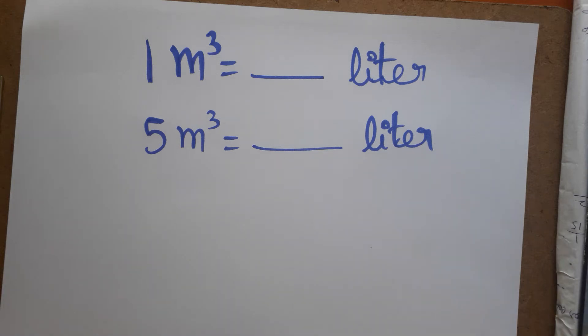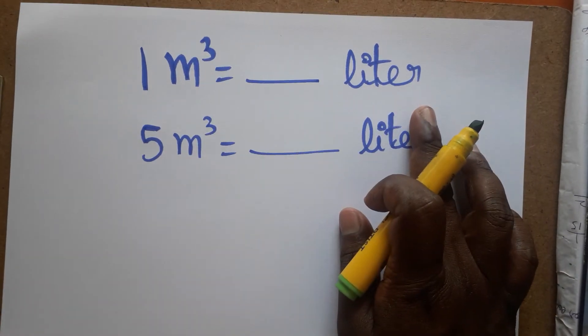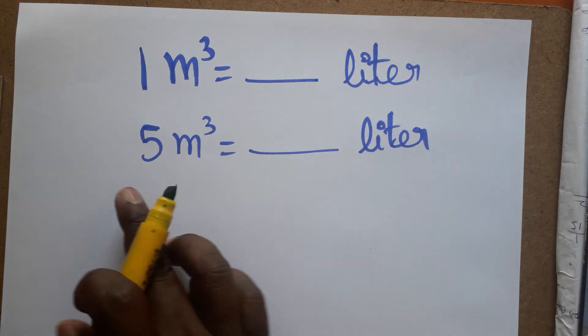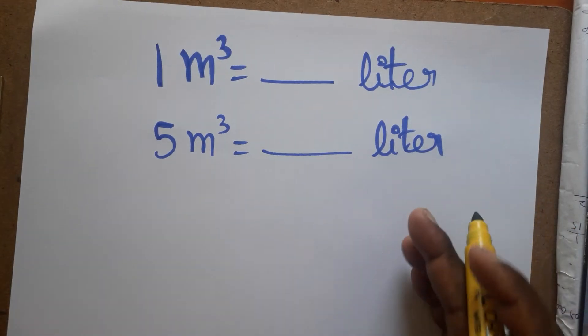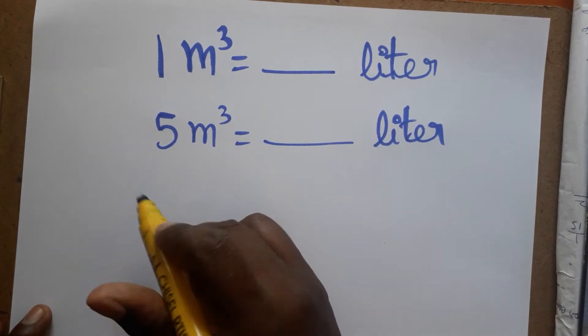Today we are going to learn how to convert from meter cube to liter. If you like my channel, please subscribe. Example: 5 meter cube equals dash liter. First, we learn meter to centimeter.